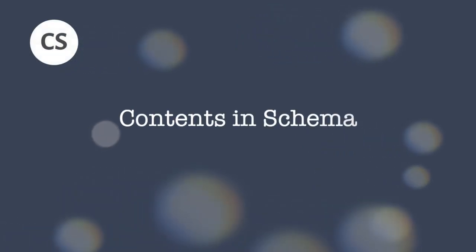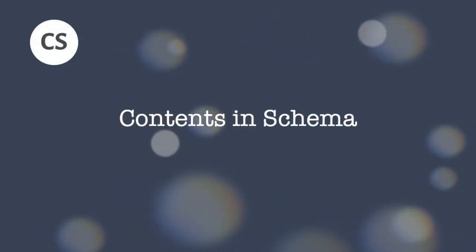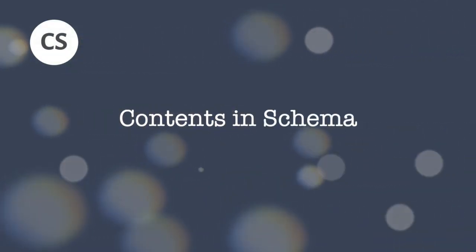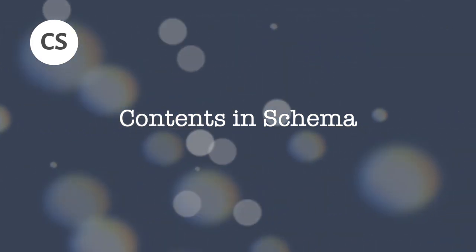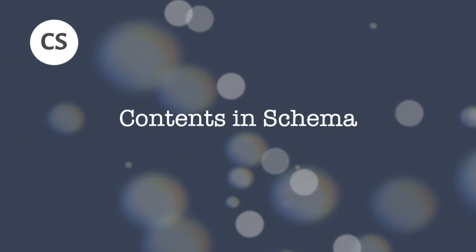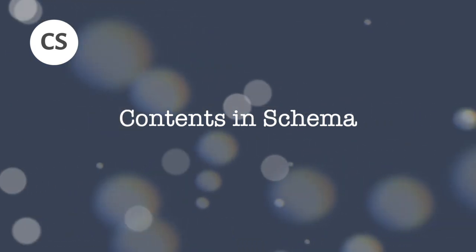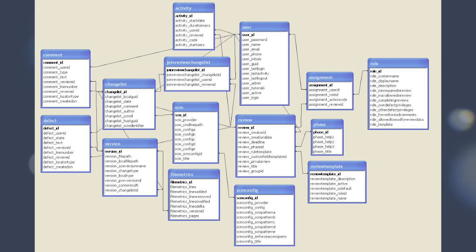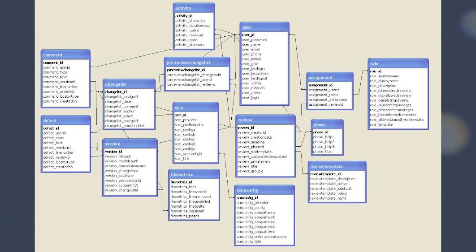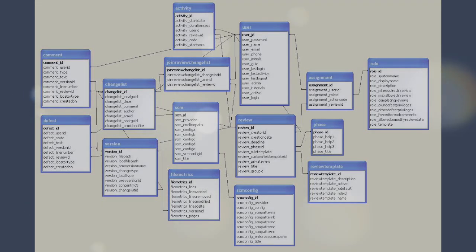Schema is a general idea about something and can help students learn. In order to use schema in education, teachers should activate prior knowledge, link new information to old information, and link different schemas to each other. Each student has a different schema depending on their prior knowledge and academic goals. By utilizing the contents in schema, students can mix and match their needs to their styles to attain more efficient learning.